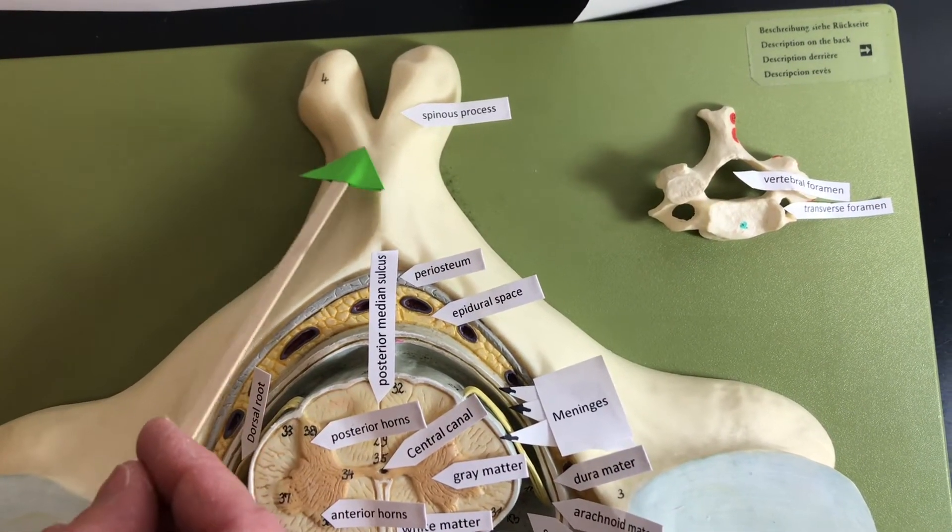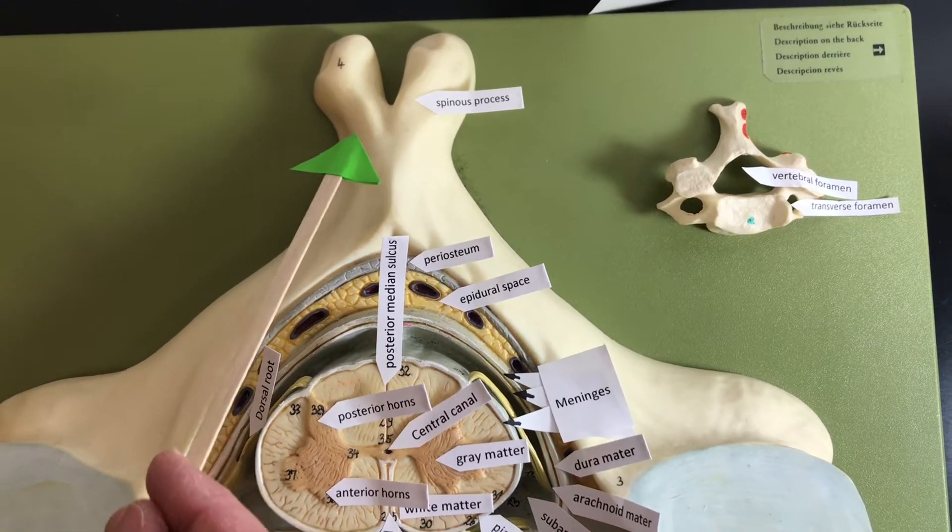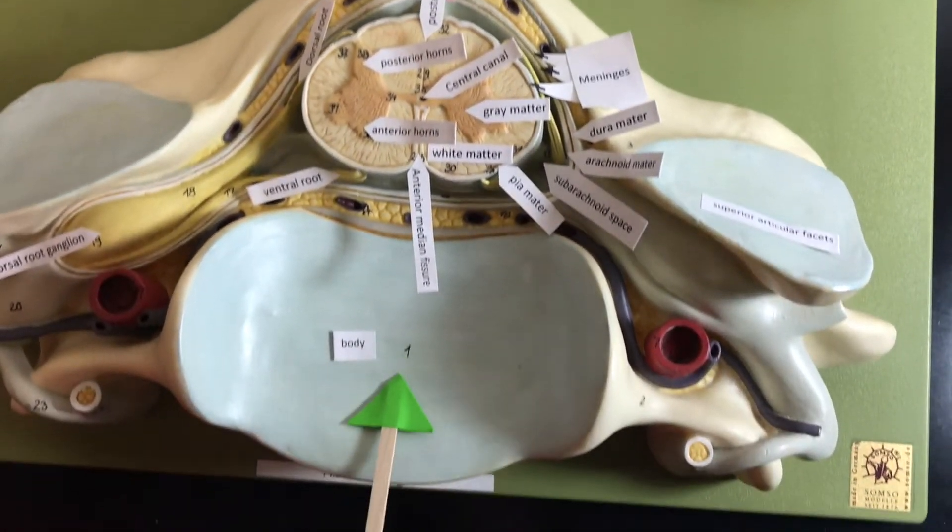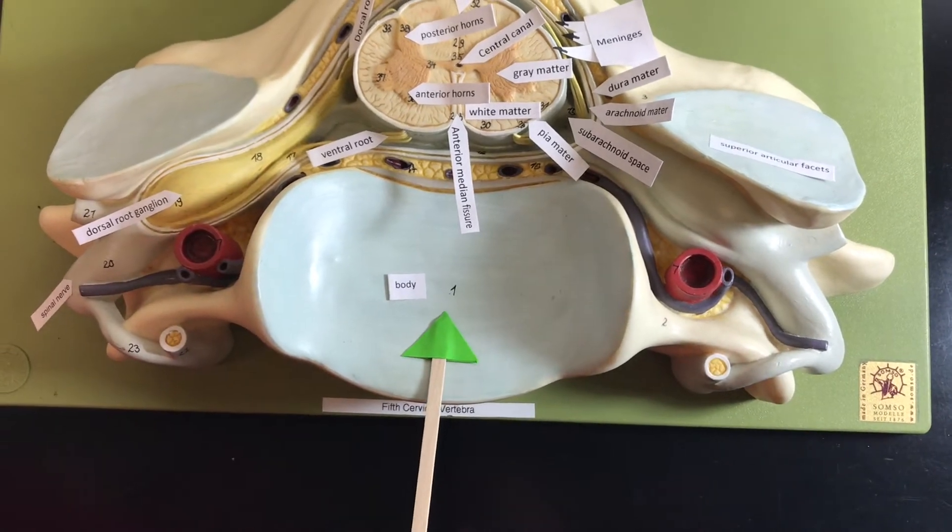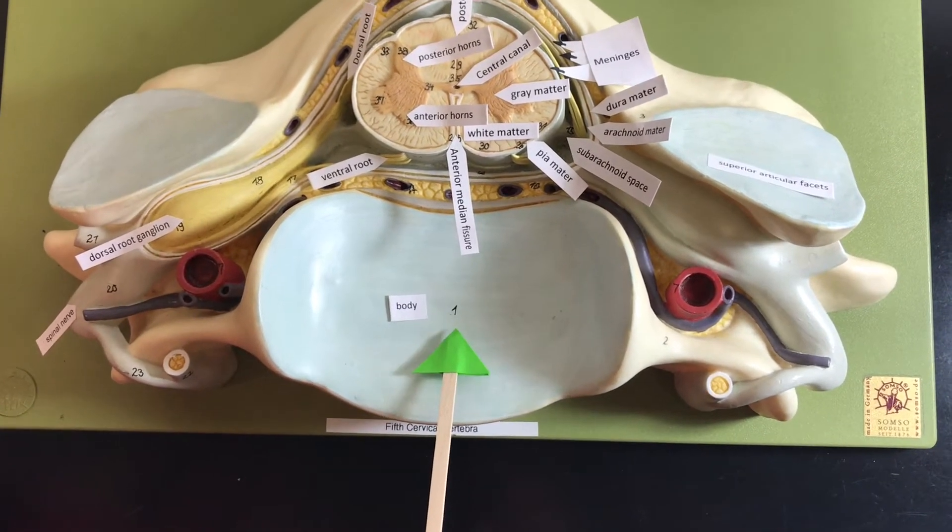This is on the posterior or the dorsal side of the body. And the body of the vertebrae is on the anterior side. So that helps us have orientation.